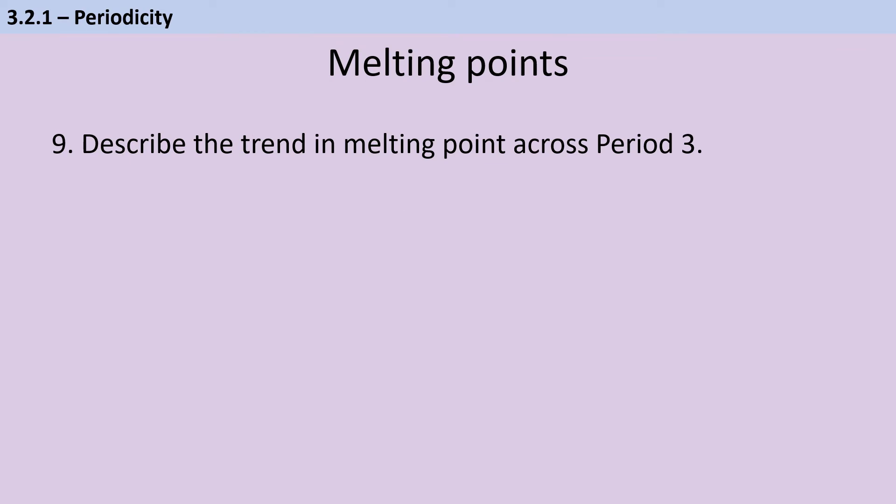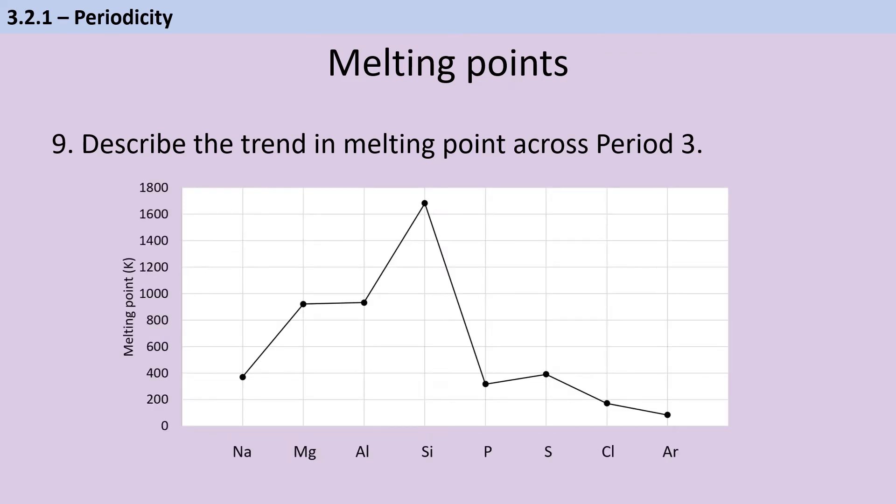This is maybe not strictly a fair question because there isn't really one single trend as you go across period 3. What we see is a gradual increase for four elements and then a sharp decrease and then a slightly more gradual decrease. The three metallic elements come first, then we have silicon, which is a giant covalent substance, then we get our simple molecular structures, and finally, we have our monatomic noble gas.